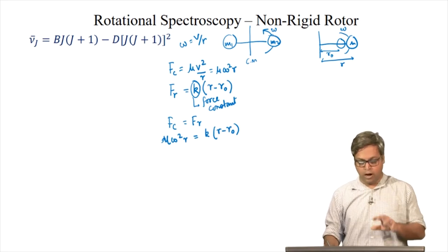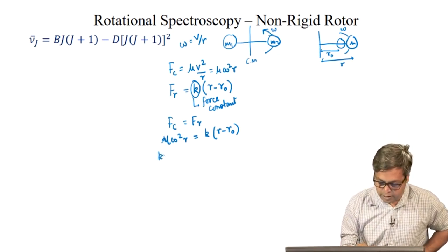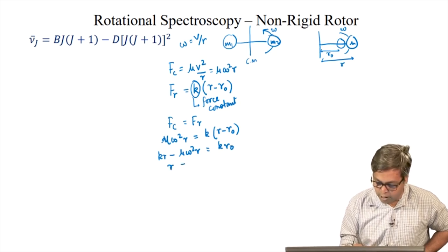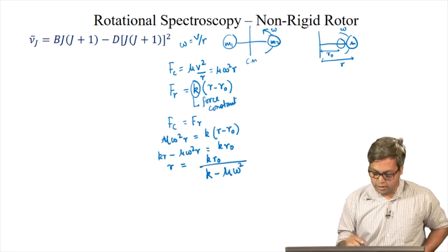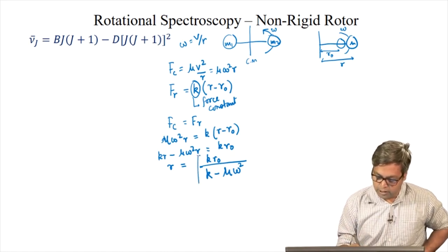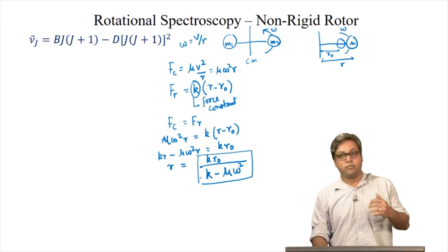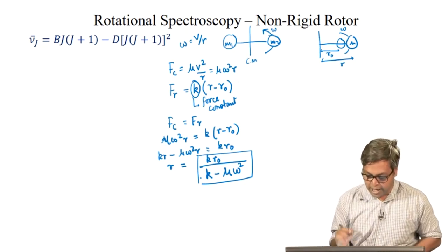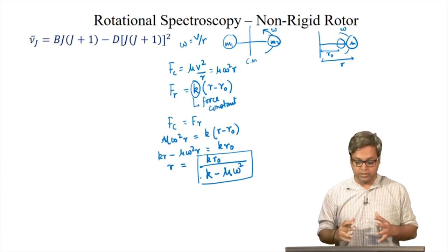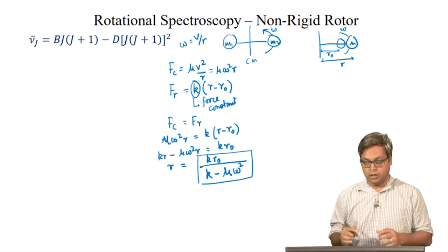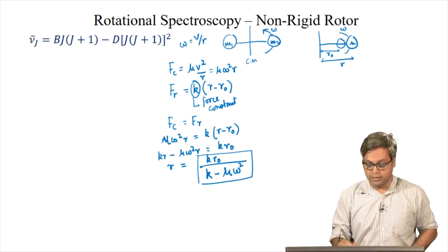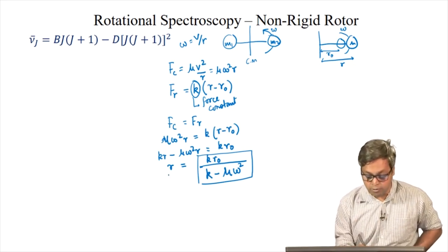Rearranging, we get kr − μω²r = kr₀, so r = kr₀ / (k − μω²). From this equation, as the angular velocity increases — that is, as the molecule goes to higher J levels — k − μω² decreases. Since this quantity is in the denominator, the internuclear distance r increases.